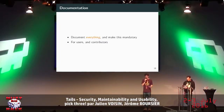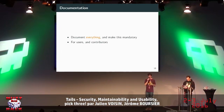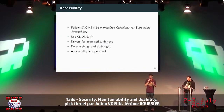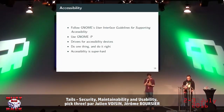Everything is documented — how to use Tails, how it's developed, how updates are done, how you can contribute. Every time someone pushes a new feature or new code, they must bring documentation with it. It's mandatory: you can't push a new feature without documentation. This applies to both developers and users. For accessibility, we use GNOME because it's very well documented and has very good guidelines for making interfaces usable by everyone, even non-skilled people.